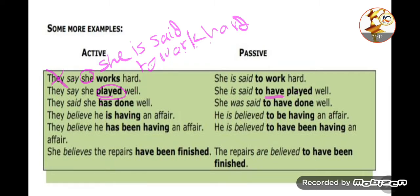'They believe he is having an affair.' He is believed to be having an affair.' We use 'to be' here because 'is having' is present continuous — as we said, if we have 'is', 'was', or 'am' — continuous tense — it becomes 'be' + verb-ing.